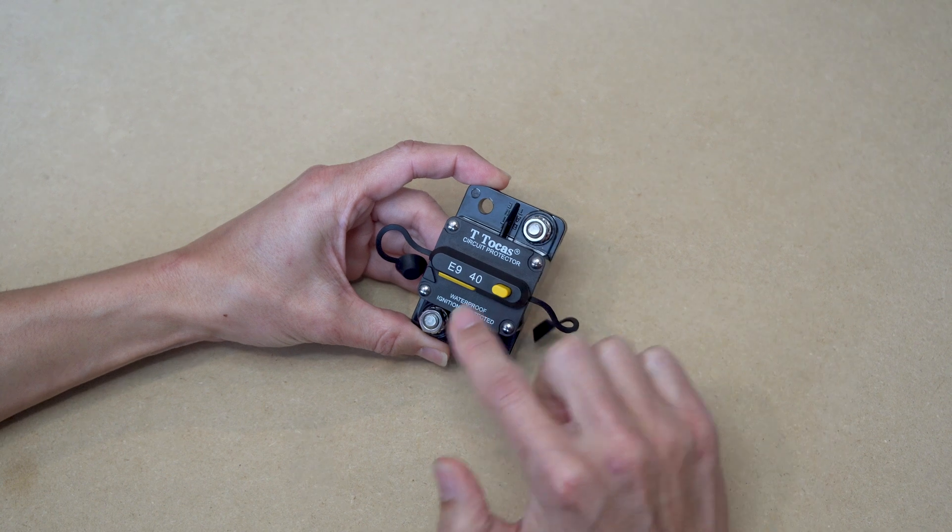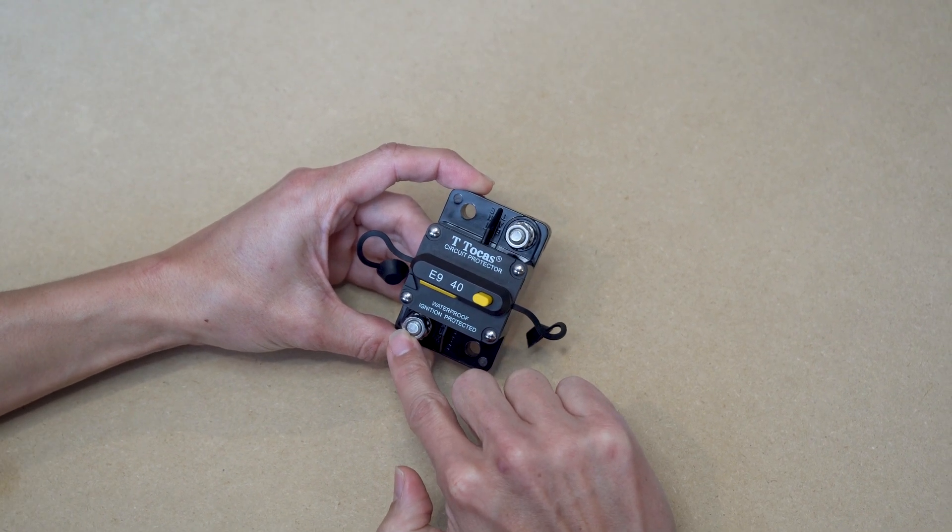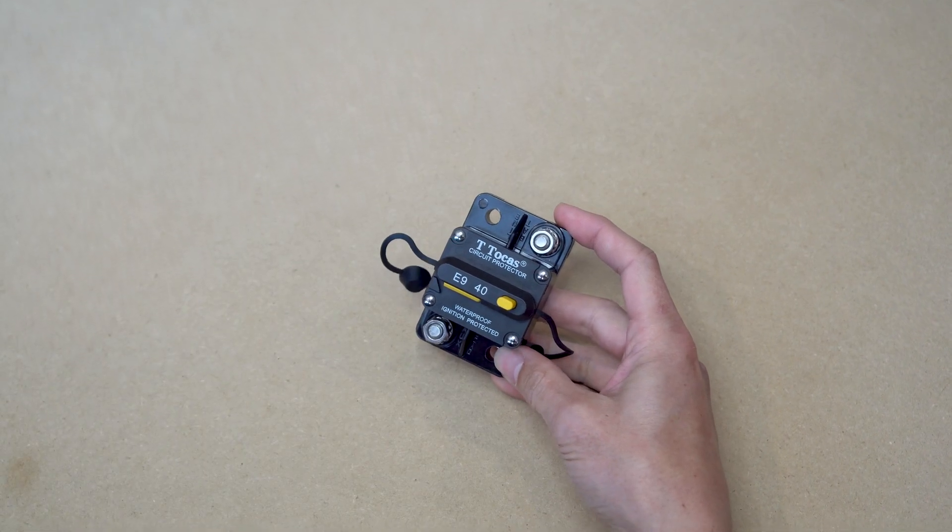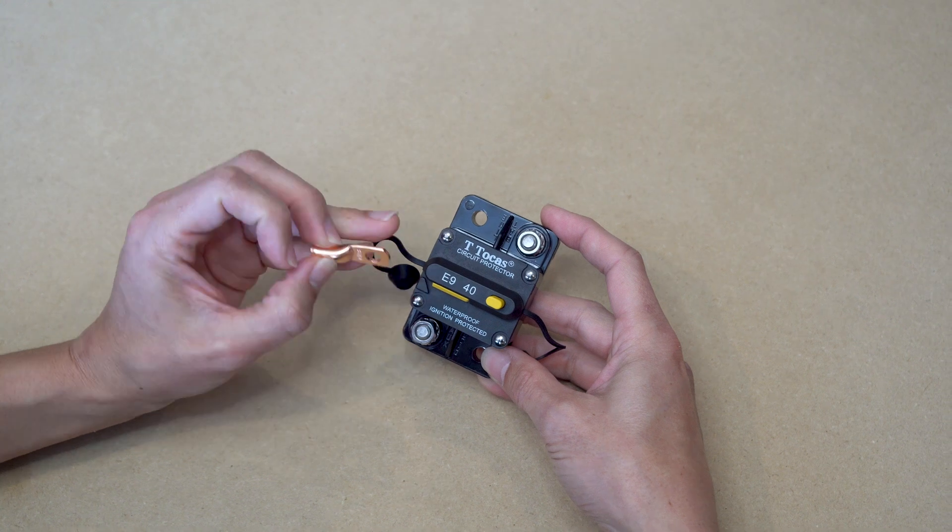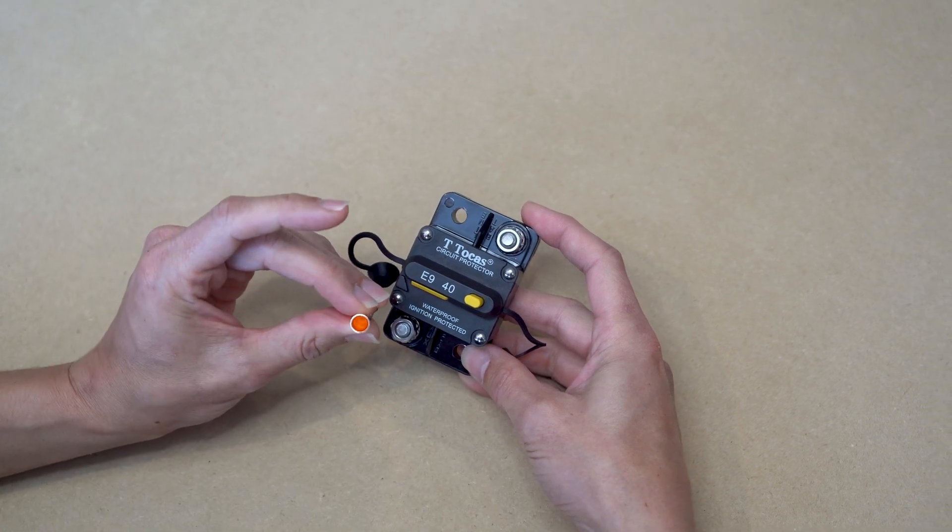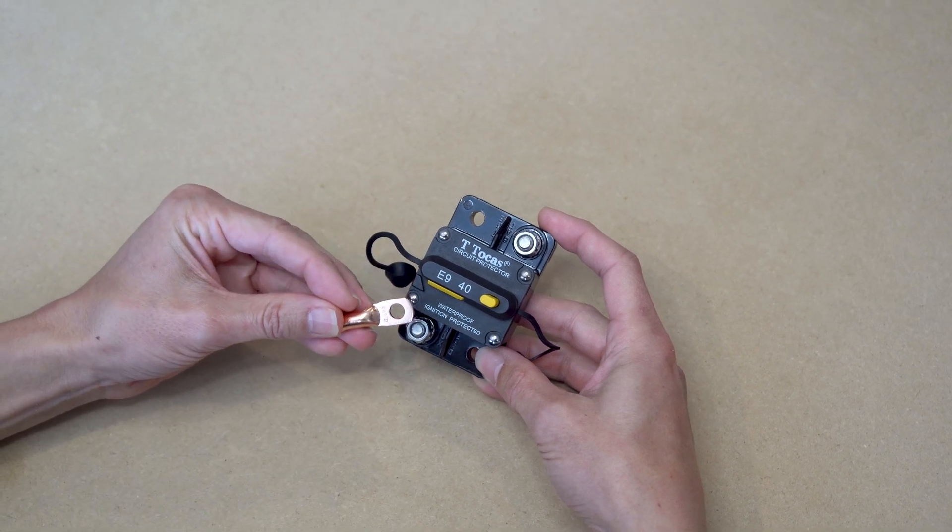These are quarter of an inch terminal posts. So to connect these posts to your wires, you'll need quarter of an inch terminal lugs. In this example, I'm going to use these quarter of an inch lugs, which accommodate 8 gauge wire. To make the connection, you'll first want to crimp this lug onto your wire.